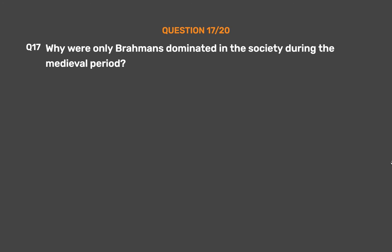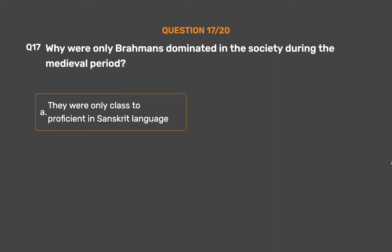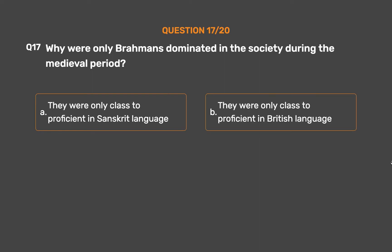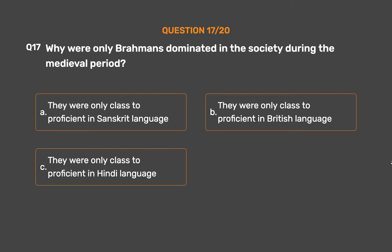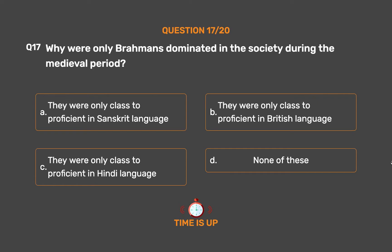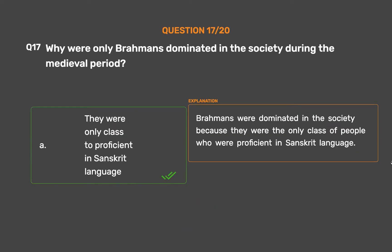Question 17: Why were Brahmins dominant in society during the medieval period? Option A: They were the only class proficient in Sanskrit language. Option B: They were the only class proficient in the British language. Option C: They were the only class proficient in Hindi language. Option D: None of these. The correct answer is Option A. Brahmins were dominant in society because they were the only class of people who were proficient in Sanskrit language.